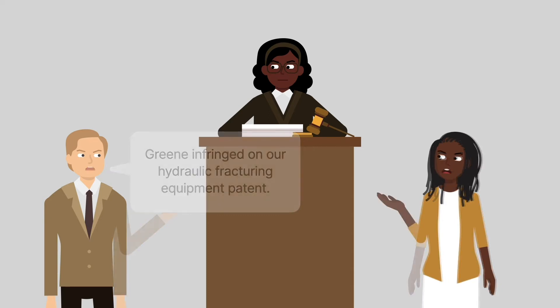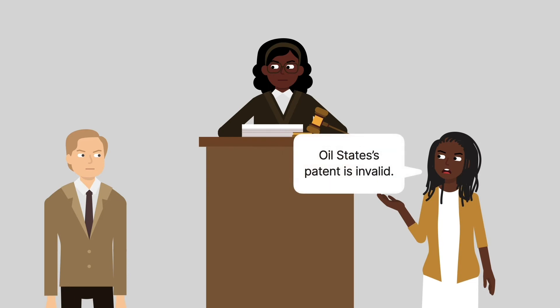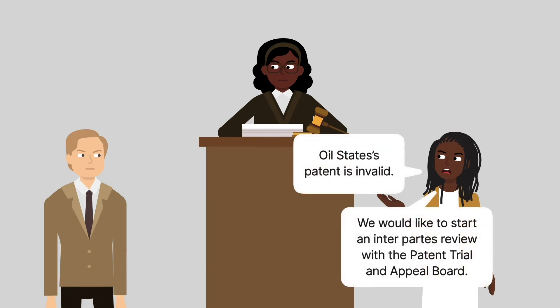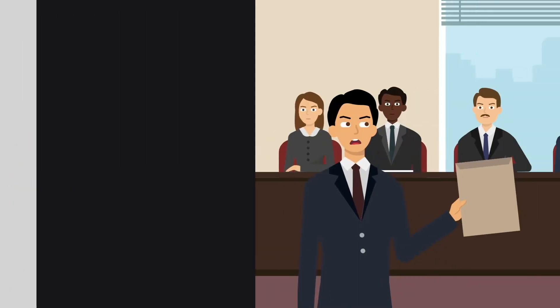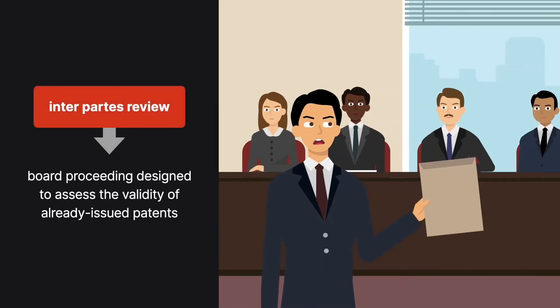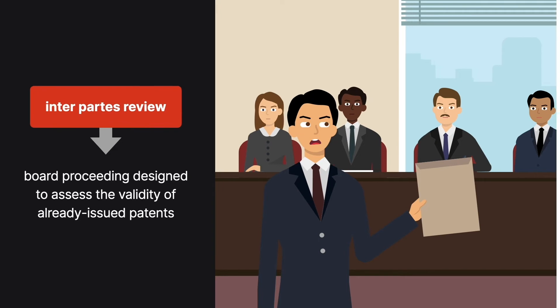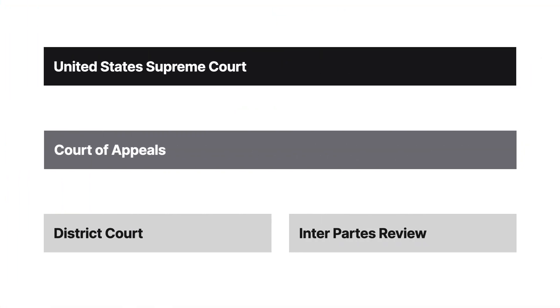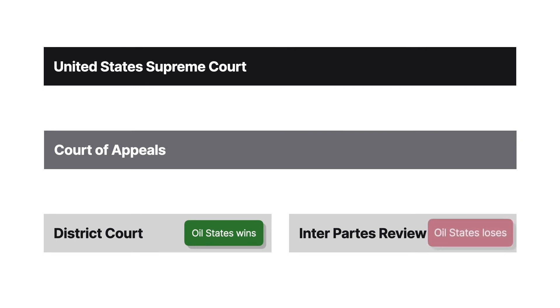Green claimed the patent was invalid and also initiated an inter-partes review with the Patent Trial and Appeal Board — a board proceeding designed to assess the validity of already issued patents. The district court found for Oil States, and the board found that Oil States' patent was invalid.